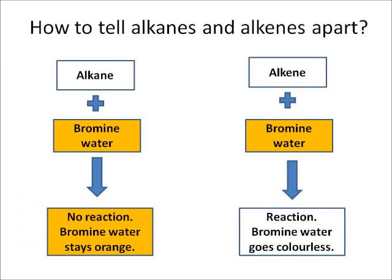We can tell alkanes and alkenes apart by looking at a simple chemical reaction. Alkanes do not react with bromine water, which is orange, so the bromine water will stay orange. However, alkenes will react with bromine water and therefore turn it from orange to colourless.